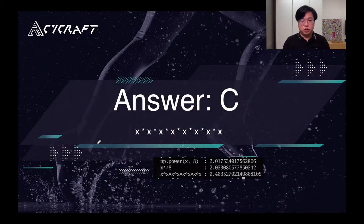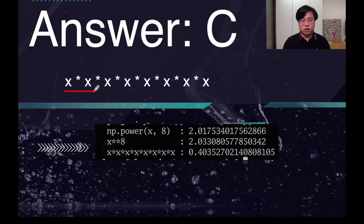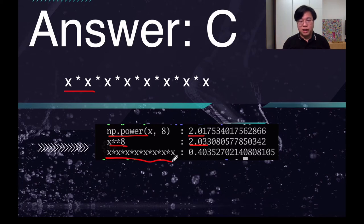The answer might surprise you — it is C, the most naive one. You just use x times x and then repeat 4 times. In order to prove it, here is the result of my benchmark code. As you can see, the power function of NumPy and x to the power of 8 both took about 2 seconds. And for the most naive one, x times x repeated 4 times, it only takes 0.4 seconds. So it's about 5 times faster than the previous two.